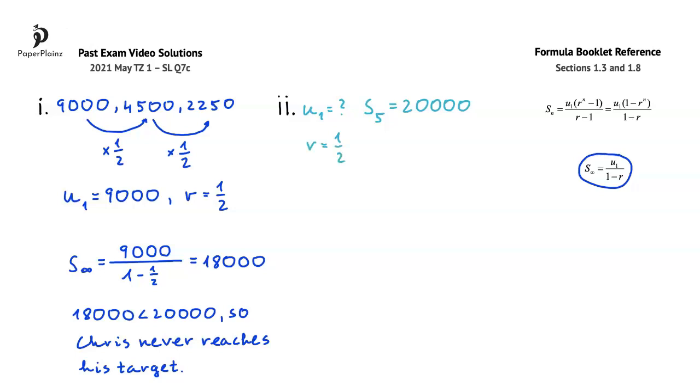Since the common ratio is between 0 and 1, we'll use this geometric sequence sum formula from section 1.3 of the formula booklet. Substituting, we get that 20,000 is equal to u1 multiplied by 1 minus 1 half to the power of n, which here is 5, divided by 1 minus 1 half.